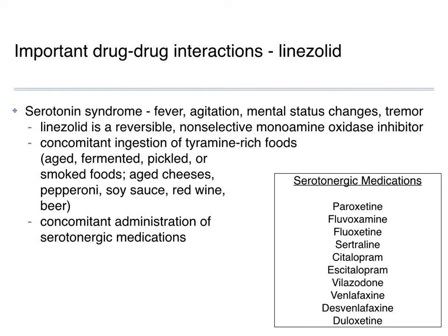From a drug interactions point of view, linezolid has a fairly significant interaction causing serotonin syndrome. Linezolid is a monoamine oxidase inhibitor, so if you use it in combination with other MAOIs you can have the potential for serotonin syndrome. Also with tyramine-rich foods — aged, fermented, pickled foods, chianti — but more importantly from the standpoint of concomitant drug interactions, the most important being concomitant use of antidepressants.